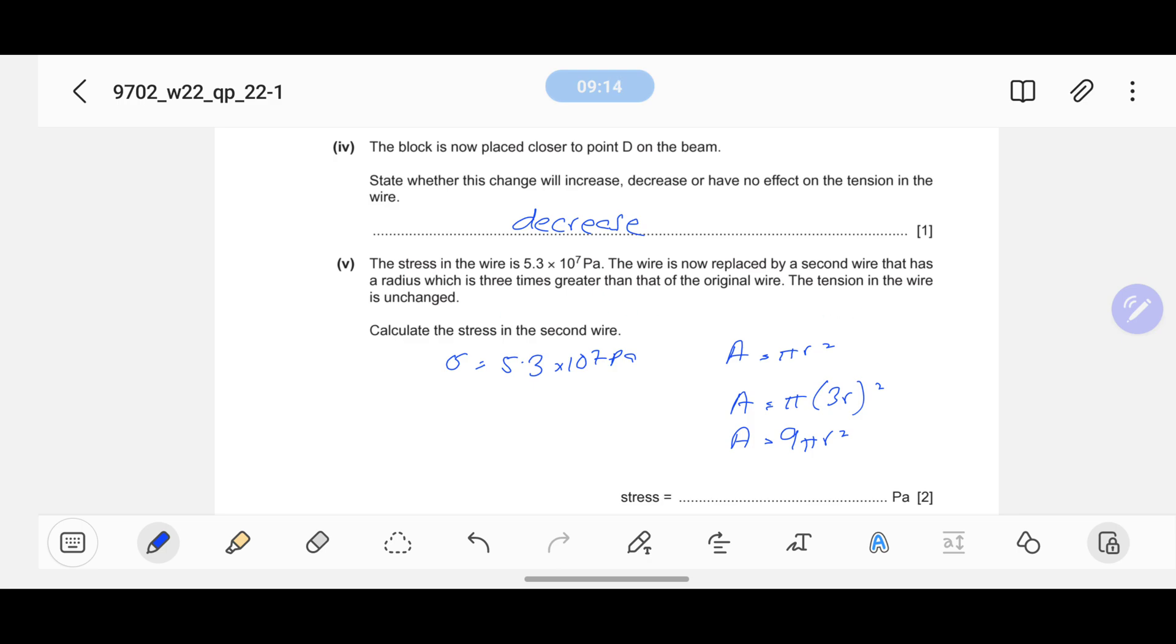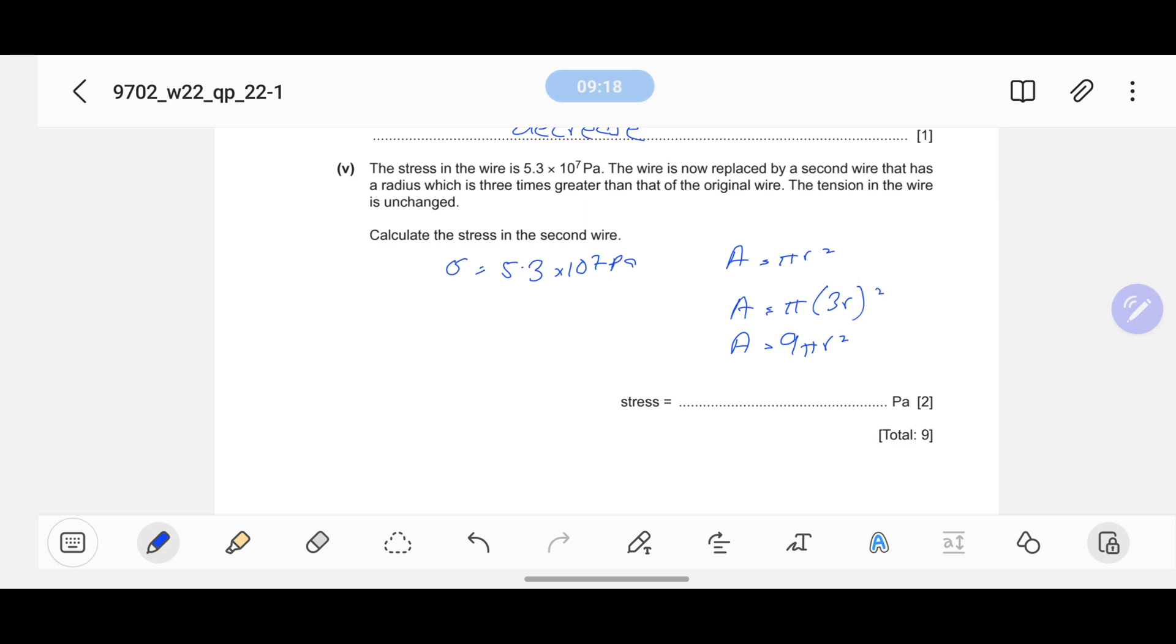The tension in the wire is unchanged. Calculate the stress in the second wire. What you're going to do is: initially we have this area, we got this stress, now the area has been increased. If my area increases, I obviously know that my stress will decrease. If I make the ratio: area initial over area final, it will make πr² over 9πr². All of them is reduced and 1 over 9 is left. If I multiply this by 1 over 9, I will get a new value.